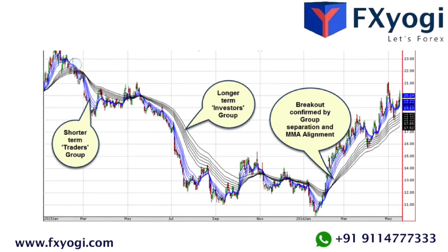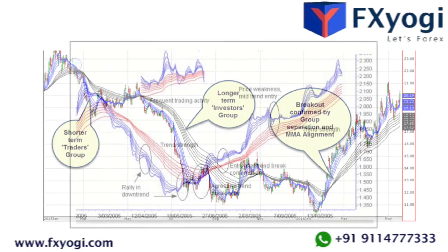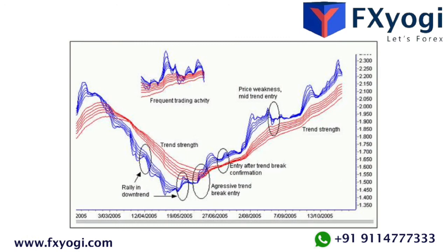The degree and nature of separation in the long-term group of EMAs define long-term trend strength. The degree and nature of separation in the short-term group of EMAs define the short-term market sentiment. When both groups are moving in the same direction — both trending up or down — current market sentiment and the overall trend are in agreement. A comparison of both groups at the same time indicates the potential for a trend change.